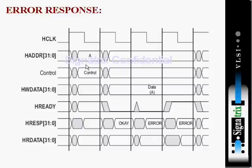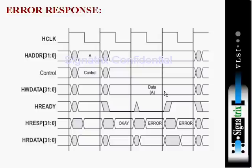It is putting the address and control signals on the bus. If it is a write operation, in the next clock cycle it will send the data. The data bus is elongated because the slave is not ready to process the data — some error happened on the slave side. That's why it is issuing a ready signal low, so the master has to retain the same data in the next cycle. Now it is issuing an error signal.